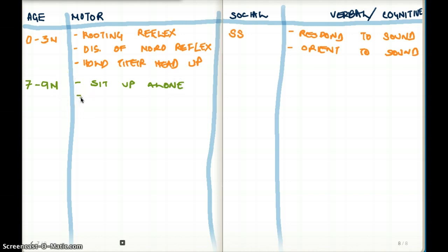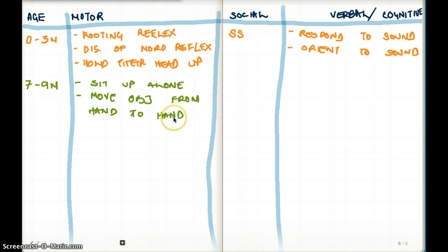From seven to nine months they will also be able to move objects from one hand to the other. Notice that hands mature before feet — they can move objects from hand to hand, and then they start to crawl. So sitting up alone, moving objects hand to hand, and crawling are the motor milestones from seven to nine months.